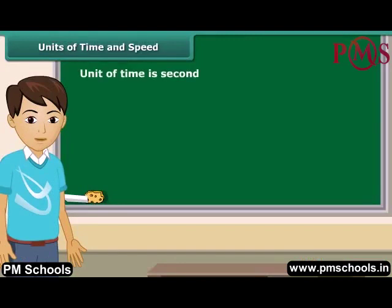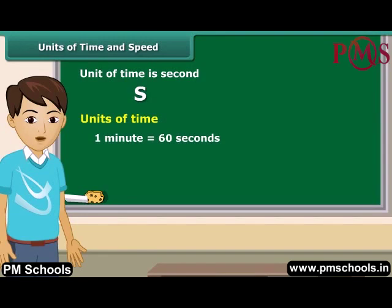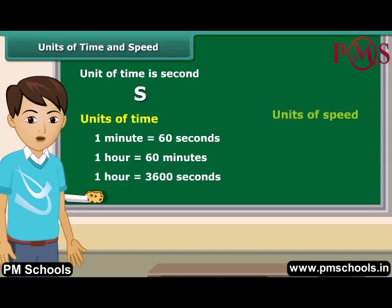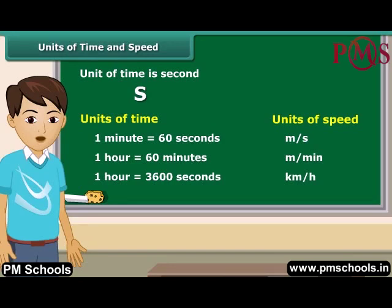The basic unit of time is the second, and its symbol is S. Larger units of time are minutes and hours. One minute is equal to 60 seconds, and 60 minutes are equal to one hour. The basic unit of speed is meter per second. We can also express it in other units such as meter per minute and kilometer per hour. We write the symbols of all units in singular.